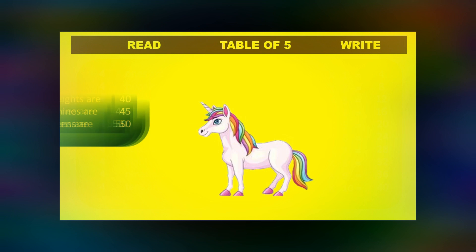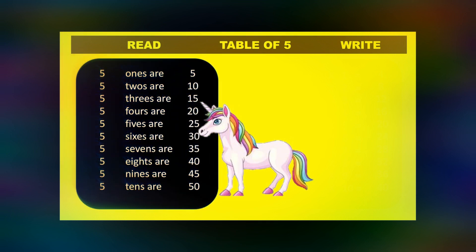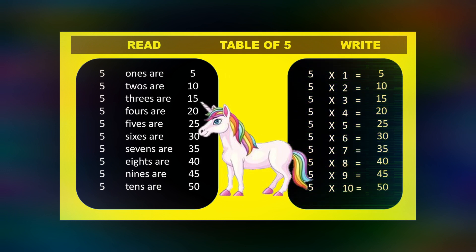Let's start the table of 5. 5 1s are 5. 5 2s are 10. 5 3s are 15. 5 4s are 20. 5 5s are 25. 5 6s are 30. 5 7s are 35. 5 8s are 40. 5 9s are 45. 5 10s are 50.